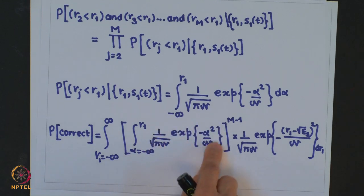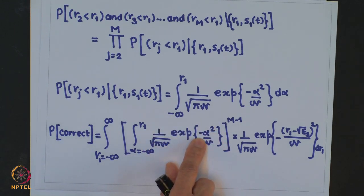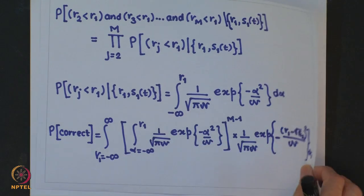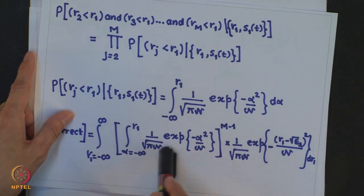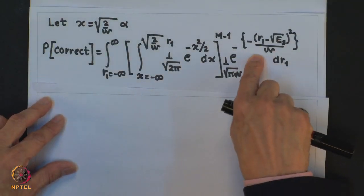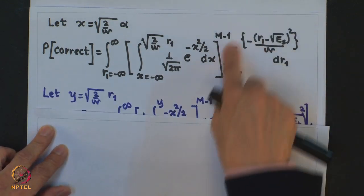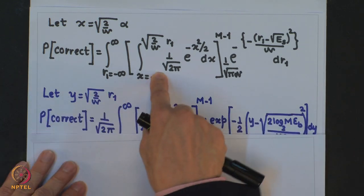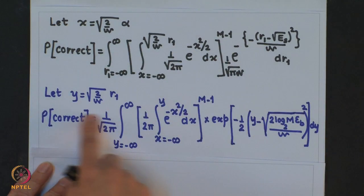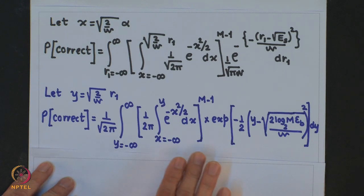We cannot get a closed-form solution, but we can make the expression more explicit in terms of M and SNR per bit. Using a change of variable — substituting x = √(2/N₀)·α — we simplify the inner integral. Then substituting y = √(2/N₀)·R_1, the expression reduces to a cleaner form in terms of M and E_b/N₀.